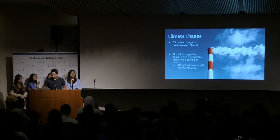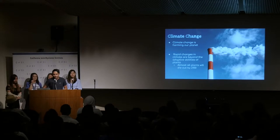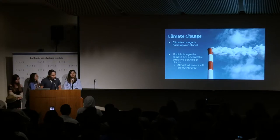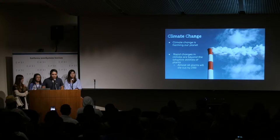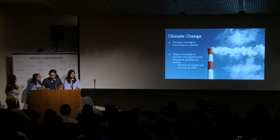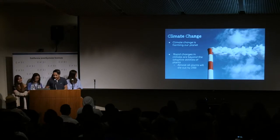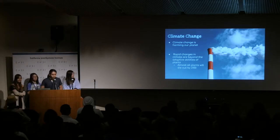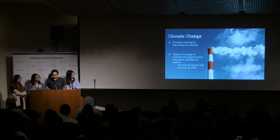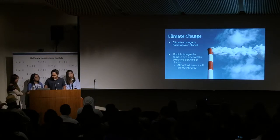So as most of us know, global warming is a global epidemic that has potential to destroy our Earth, basically. And if global warming continues, almost all plants will die out by 2100.